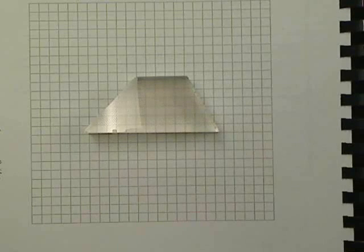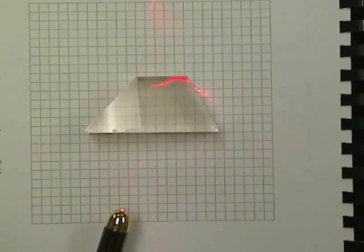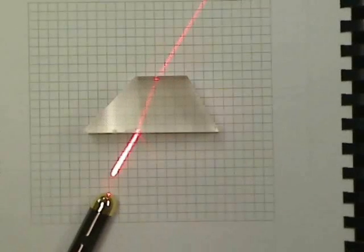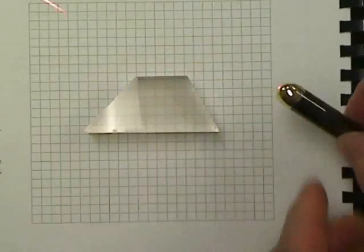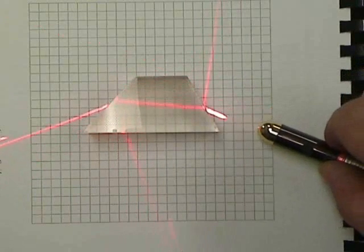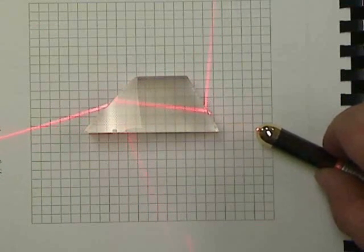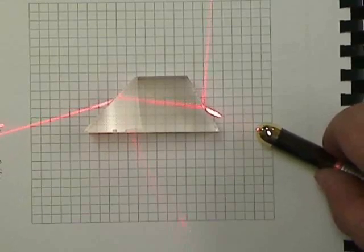The first things that students investigate in this activity is how a laser ray goes through the parallel sides of a trapezoid and then how they go through the non-parallel sides. In both instances, they measure the angle of incidence and the angle of refraction.